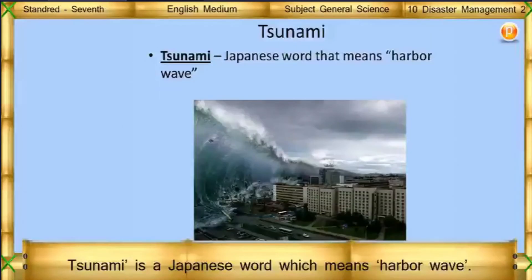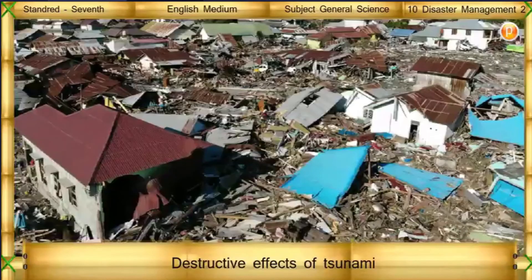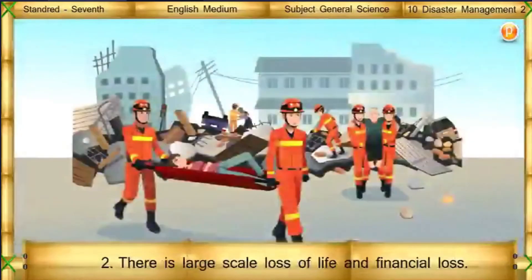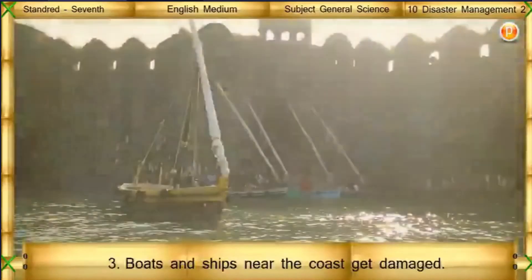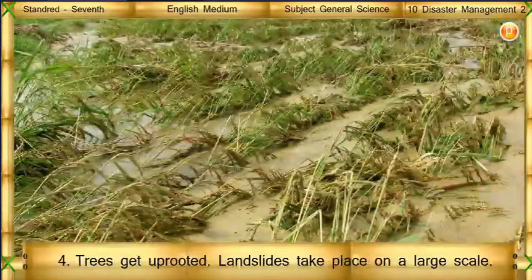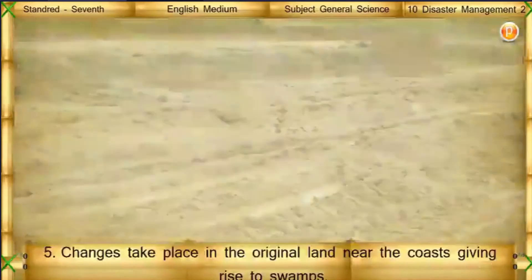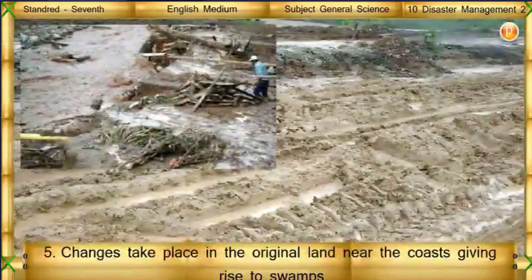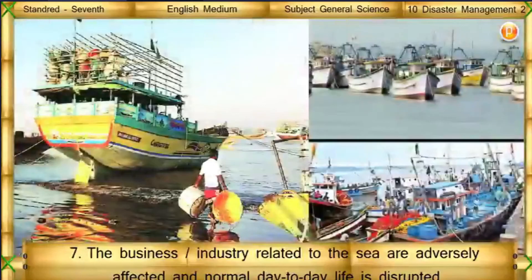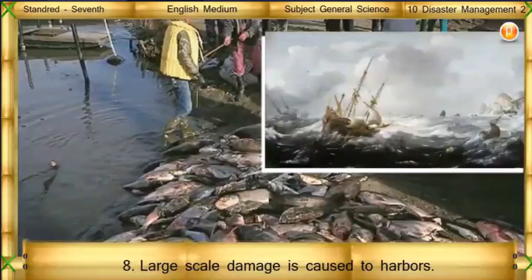Such a wave generated by an earthquake or volcano occurring on the ocean floor is called a tsunami. Tsunami is a Japanese word which means harbor waves. Destructive effects of tsunami include: buildings and other constructions are destroyed; there is large-scale loss of life and financial loss; boats and ships near the coast get damaged; trees get uprooted; landslides take place on a large scale; changes occur in the original land near the coast giving rise to swamps; traffic obstructions arise; sea-related businesses are adversely affected; and large-scale damage is caused to harbors.